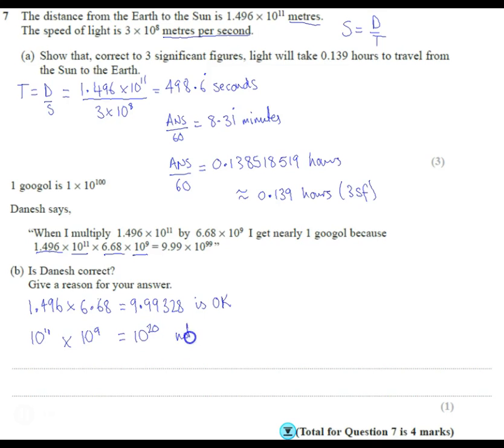So when you put that together, you get the answer 9.99328 times 10 to the power of 20.